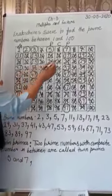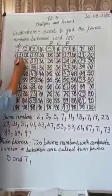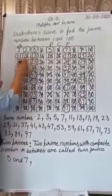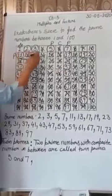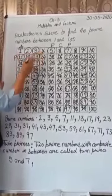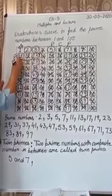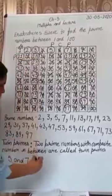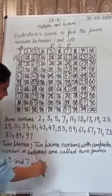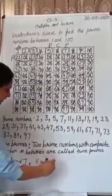Now we will find another pair: 11 and 13. 11 is prime, 13 is prime. In between, 12 is a composite number, so 11 and 13 are twin primes.